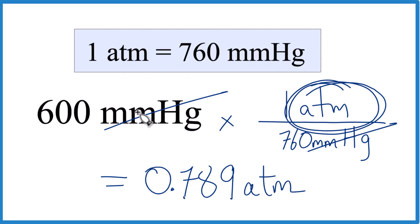This is Dr. B converting 600 millimeters of mercury to atmospheres. Thanks for watching.